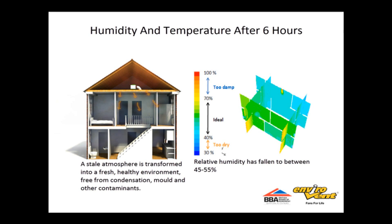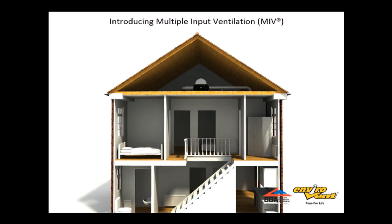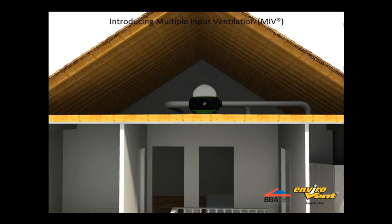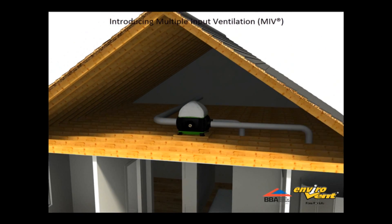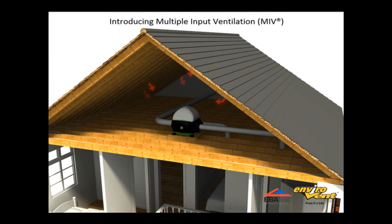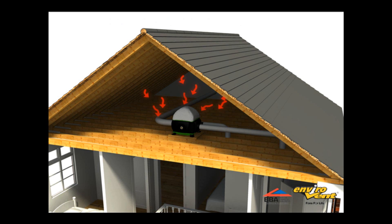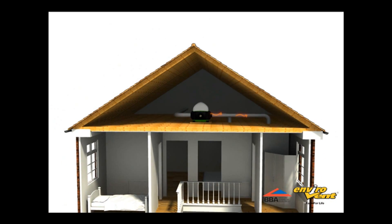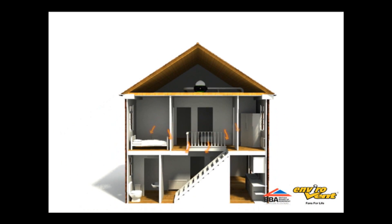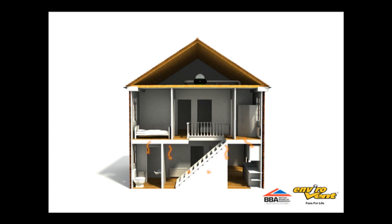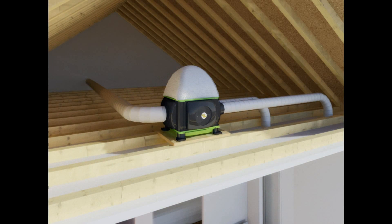Another strategy is known as multiple input ventilation. As you can see from this animation, the loft unit is picking up free energy from the loft space, filtering the air and delivering it into the property through multiple ceiling diffusers. The advantage of using multiple inputs is that you can target certain areas of the home where there may be a condensation or mould problem, or perhaps a person suffering from hay fever or asthma.